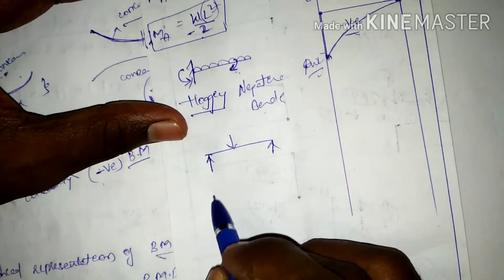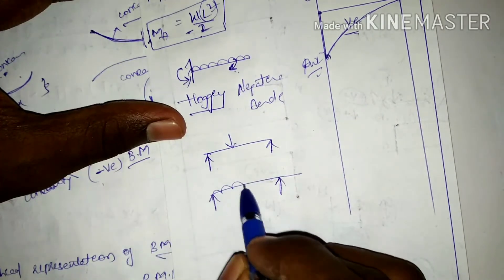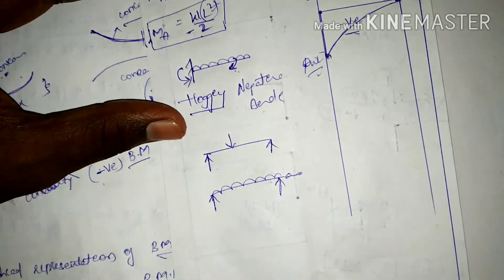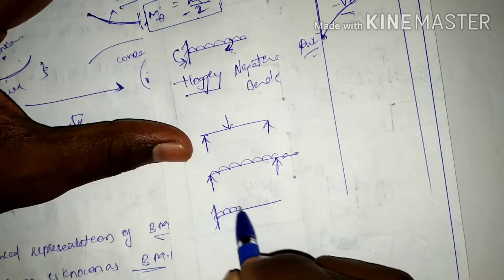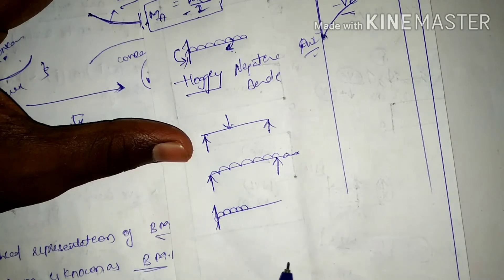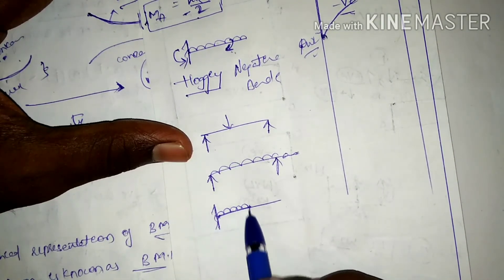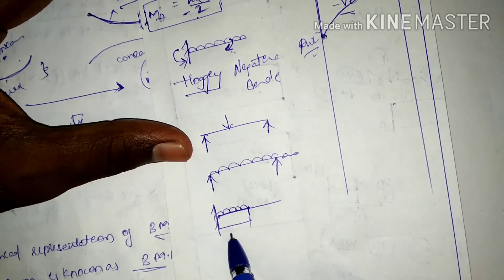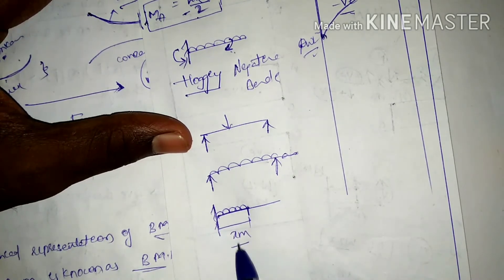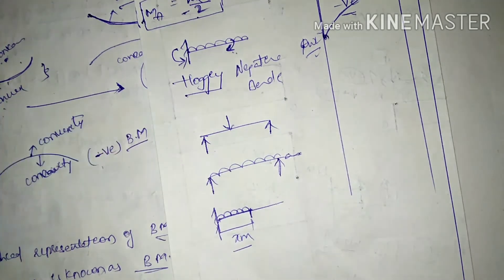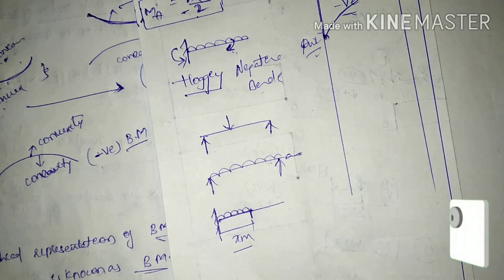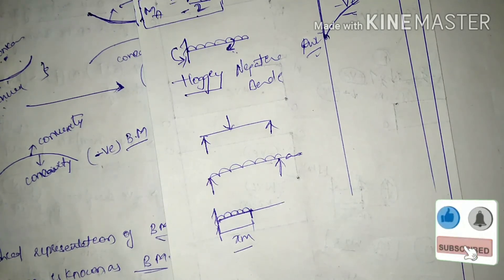Next, we will look at a simply supported beam with a point load, a simply supported beam with UDL, and a cantilever beam with partial UDL over X meters from the fixed support. Thank you for watching — please subscribe, like, and click the bell icon for regular updates.